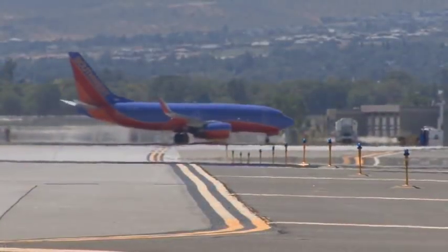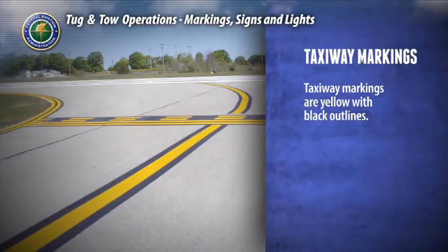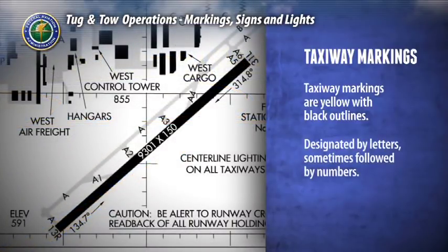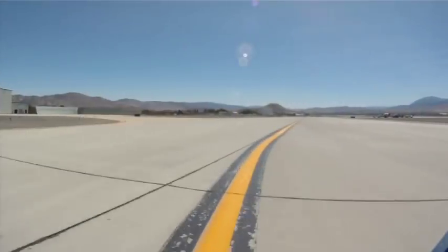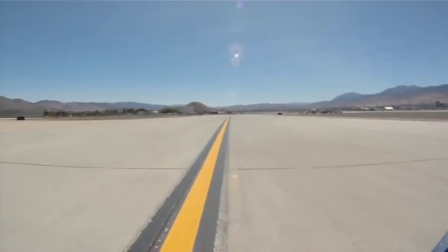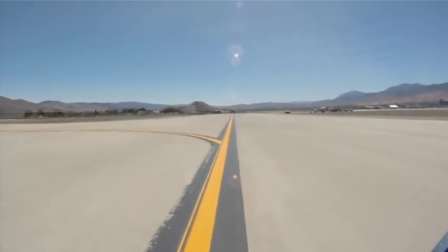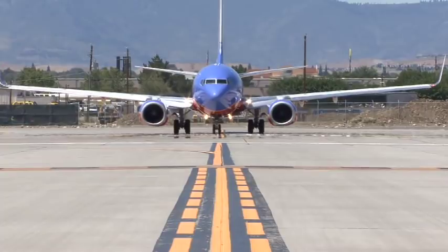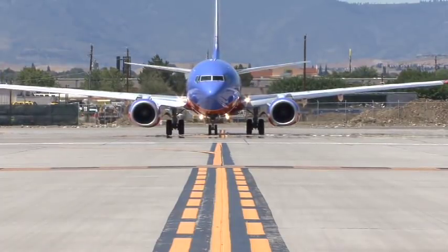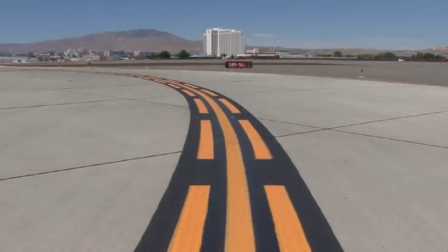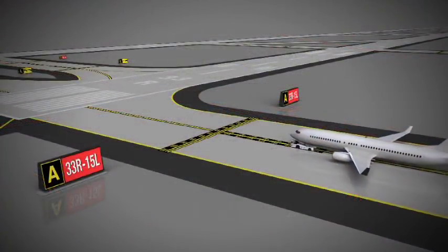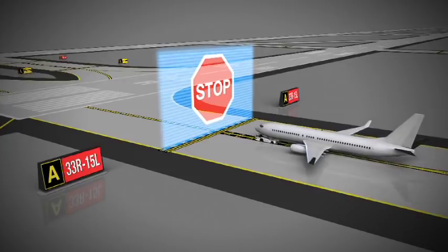All taxiway markings will be yellow and may be outlined in black to increase visibility. Taxiways are designated by letters followed by numbers in some instances. The center line — the line of alignment you use to keep the aircraft in the center of the taxiway — has a solid yellow stripe. The nose gear should travel along the center of this line. An enhanced taxiway center line warns you of an upcoming hold position, and air traffic control clearance is required to cross the hold position.